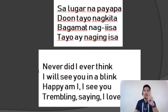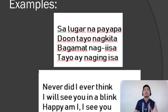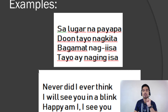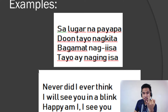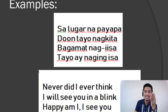I have here examples — one Filipino example and one English example. Let's have the Filipino one first. 'Sa lugar na payapa, doon tayo nagkita. Bagamat nag-iisa, tayo ay naging isa.' Let's count the number of syllables per line. We have seven, seven, seven, seven. As we said, Tanaga is a Filipino version of Japan's haiku, so we definitely use Filipino words put into a poem to make it a Filipino Tanaga.